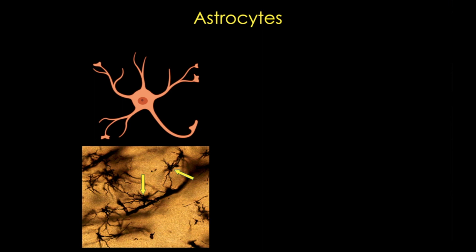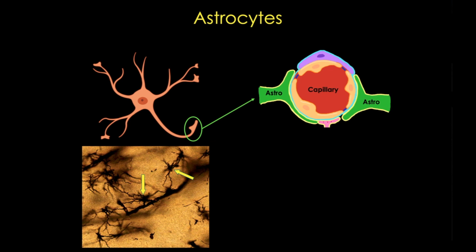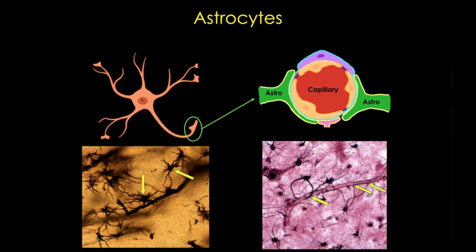Astrocytes also make endfeet on capillaries, and they help transfer molecules from the blood to neurons. Once thought to be a very lowly support cell, we know now that astrocytes constitute a huge network that influences neuronal signaling, and that they also play a large role in neurodegeneration.